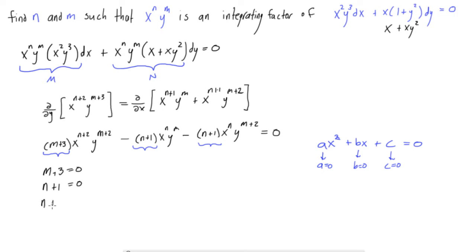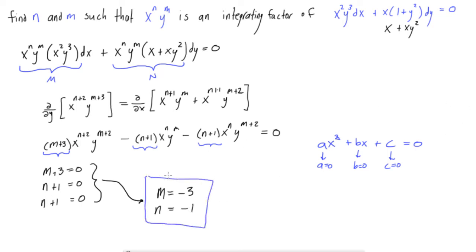Also for the last term, n+1 still has to equal zero. From this, we find that m equals negative 3, and n equals negative 1. And there we go — we found what the question was asking for. If we want to go one step further, our integrating factor mu is x to the minus 1 times y to the minus 3. But the question was only asking for m and n. See you in the next video.